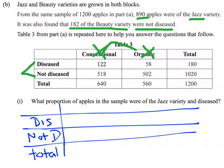The other part of the information that we've been given is whether they're a Jazz variety or a Beauty variety. So we've got a Jazz variety and we've got a Beauty variety, and we also need a total column.